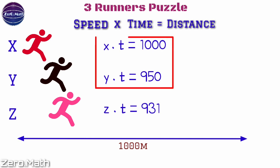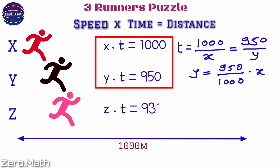If we compare X and Y, we can write down the equation: t = 1000/x which equals 950/y. Hence y = (950/1000) × x, so y = 0.95x.